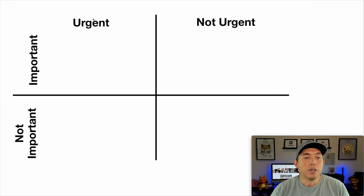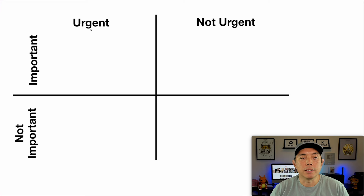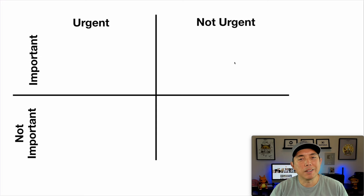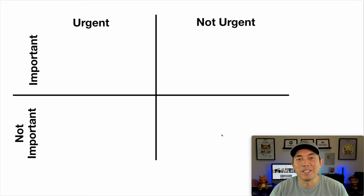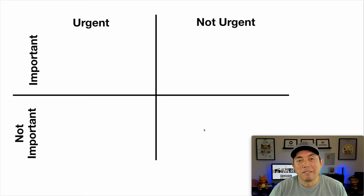Once we know what's important and urgent, we can build a matrix with four quadrants: urgent and important (priority), not urgent but important (plan it), not important but urgent (consider delegating), and not important and not urgent. If something has zero importance and zero urgency, you may want to ask yourself why it's on the list at all.